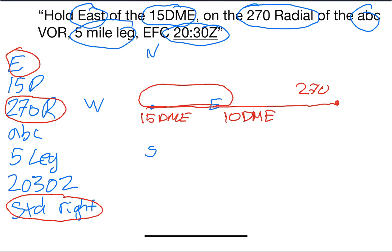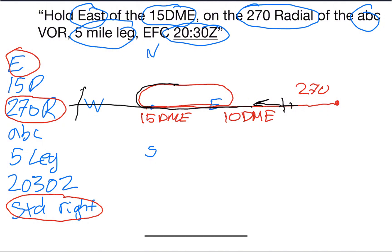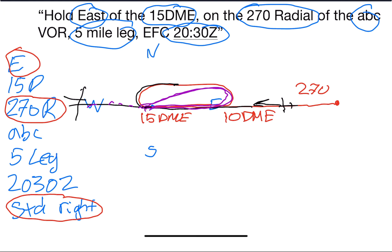You just need to look at your instruments and find where you are relative to the station. Suppose your airplane is flying towards the west — it makes perfect sense to enter on a direct entry procedure. If you're coming from the other side, you need to determine the entry type: it could be a teardrop entry or a parallel entry to get yourself established in the hold and expect further clearance. Now here's an exercise — pause the video and have a go, then we'll verify the answer together.